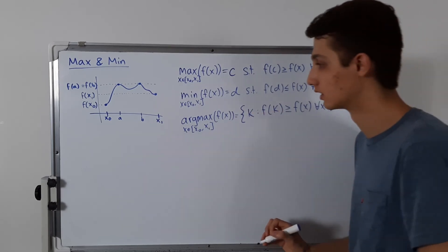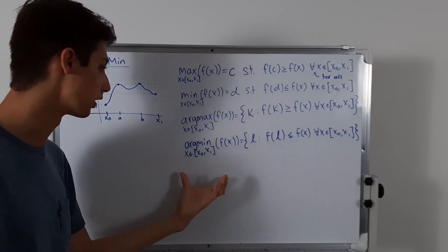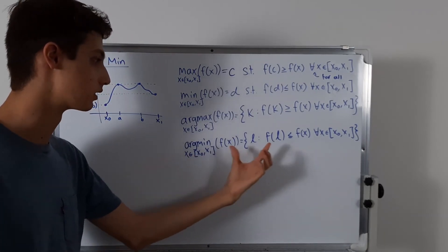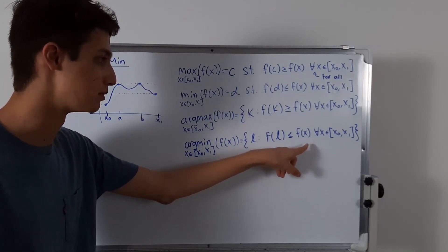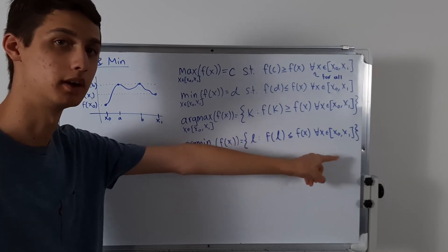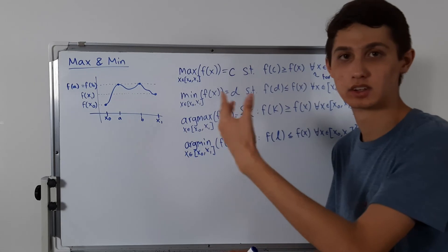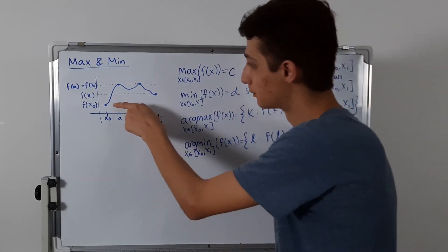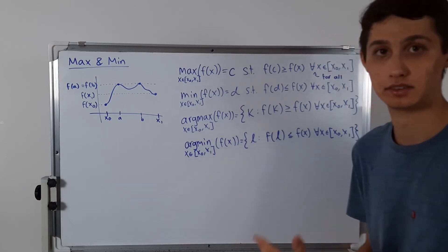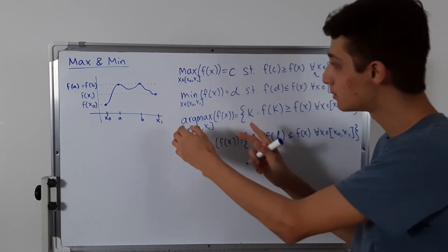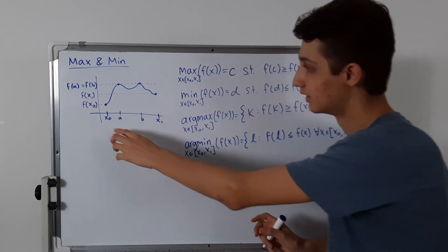So let me write it out, and I'll explain it after. So I used l as the variable here, so I'm saying that the argmin on that interval is all l values such that f of l is less than or equal to f of x for all x values in that interval. And in this case, we just have one, but it's still a set, it's just a set of one element. So in this case, that set would just compose of x0. So the minimum is f of x0, and the argmin is x0.